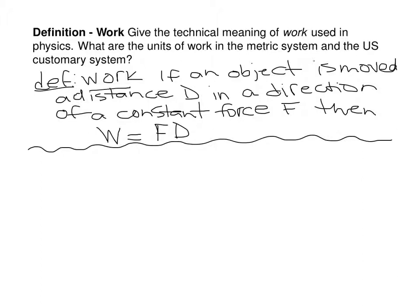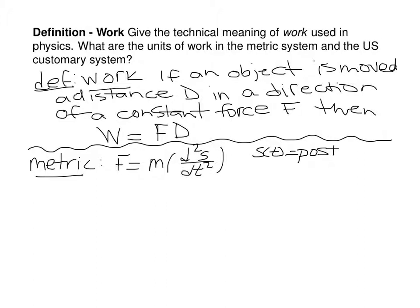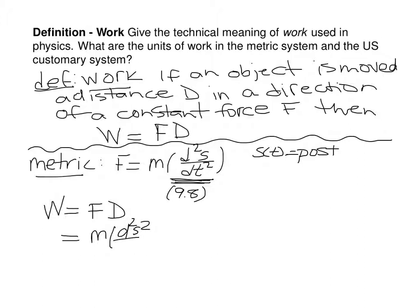You can think of force as the push or pull on an object. In the metric system, force is most commonly given by mass times acceleration. So if we have s of t as a position function, that would be times d squared s over dt squared. Often you will use acceleration due to gravity, so we would use 9.8 meters per second squared. In this case, your work equals force times distance, and work is measured in joules.